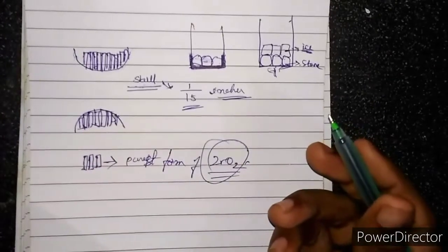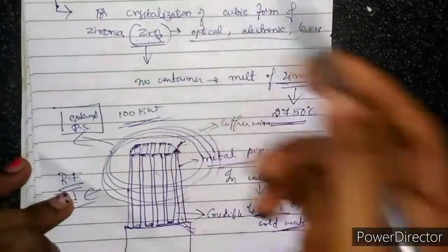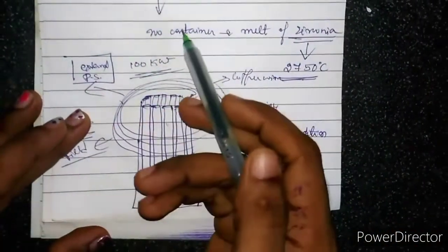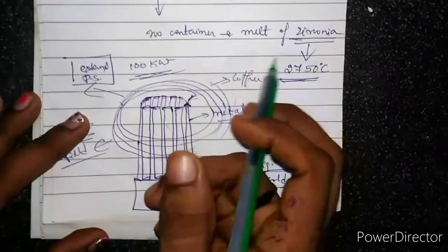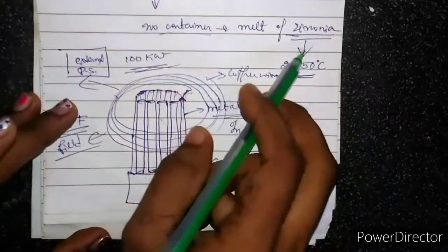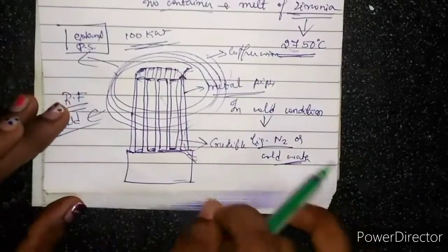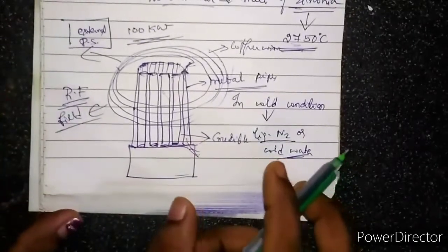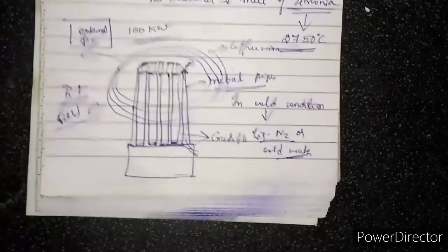The skull melting method is used specifically for the purification and crystallization of ZrO₂ because there is practically no container that can hold its melt, given its very high melting point and very high reactivity in the melt form at elevated temperature. If you have any doubt about this skull melting method, please ask in the comment section. Thank you for watching.